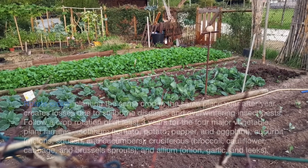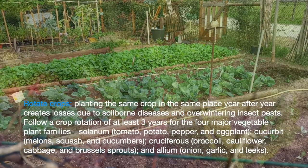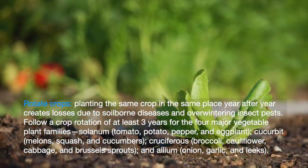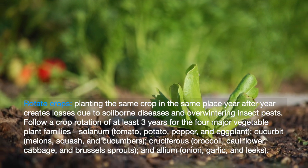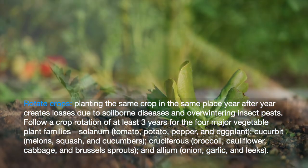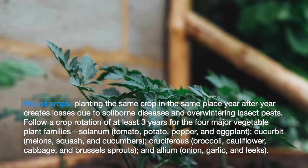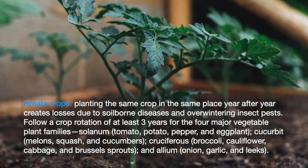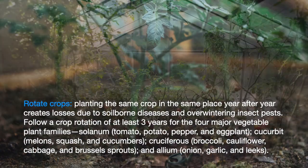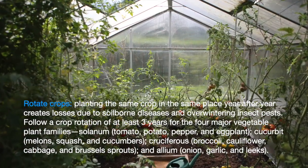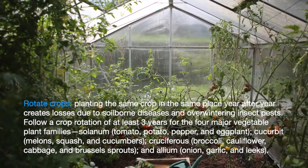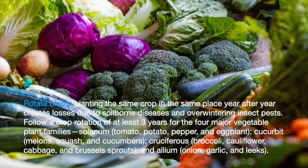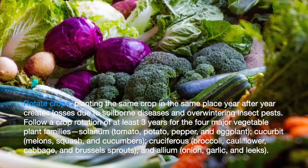Planting the same crop in the same place year after year creates losses due to soil-borne diseases and overwintering insect pests. Follow a crop rotation of at least three years for the four major vegetable plant families.